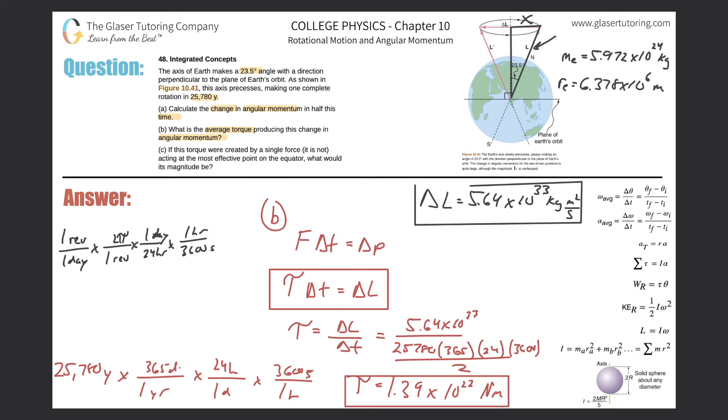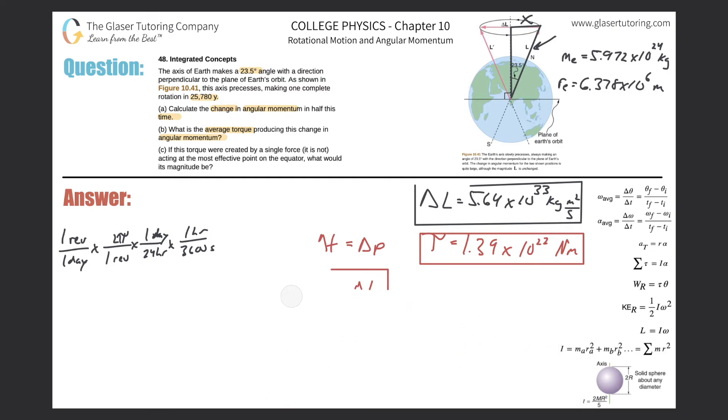So let's just move this on up. That looks good. So that's letter B. And we'll do some more erasing. And let's see what we got for letter C. Alright. So letter C now, it says, if this torque were created by a single force, it is not, acting at the most effective point on the equator, what would its magnitude be? Alright. So this one's not that bad. We're going to take an aerial view of the earth. Well, aerial view, it's spherical. So it depends on what perspective, here's the North pole. You're looking down from the North pole. You're on top of the earth right up here and you're looking down. So, here's the North pole and this outer perimeter is obviously the equator.